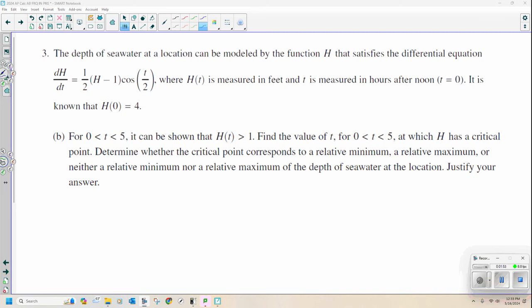Three B. For time between zero and five, it can be shown that h of t is greater than one. Find the value of t for t between zero and five at which h has a critical point. Ooh, it's getting good already. h has a critical point. Then determine whether the critical point corresponds to a relative min, a relative max, or neither a min or max for the depth of the seawater at the location.